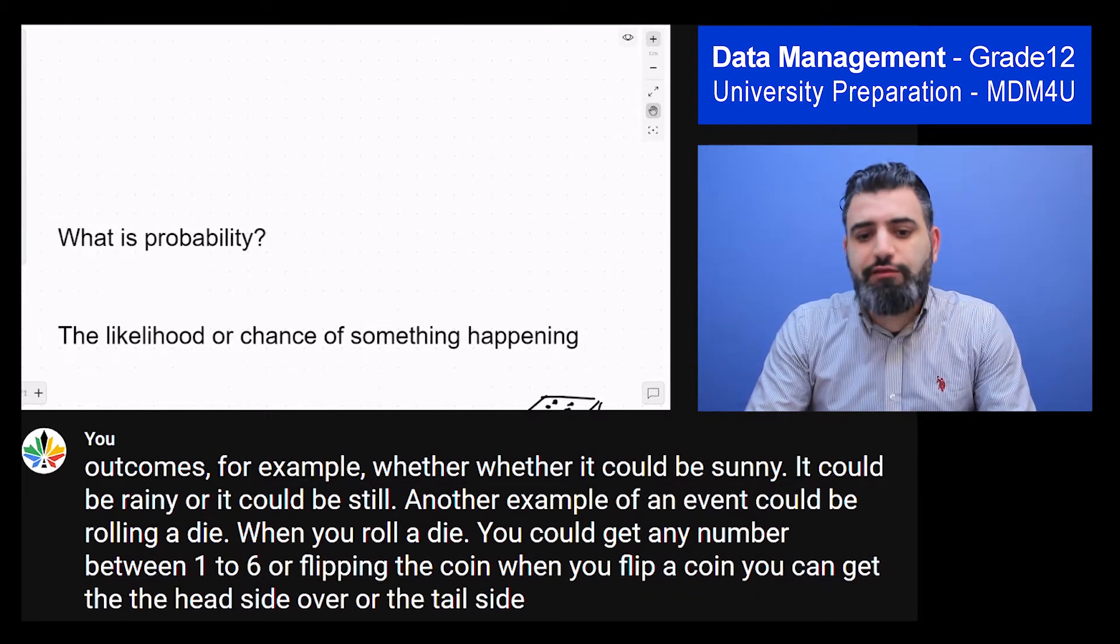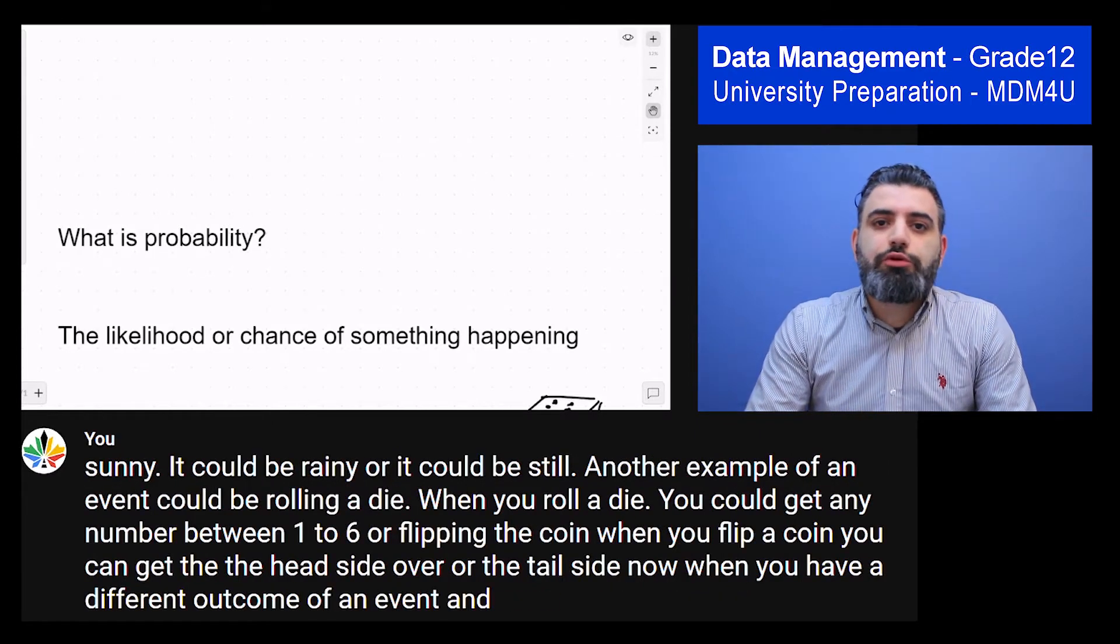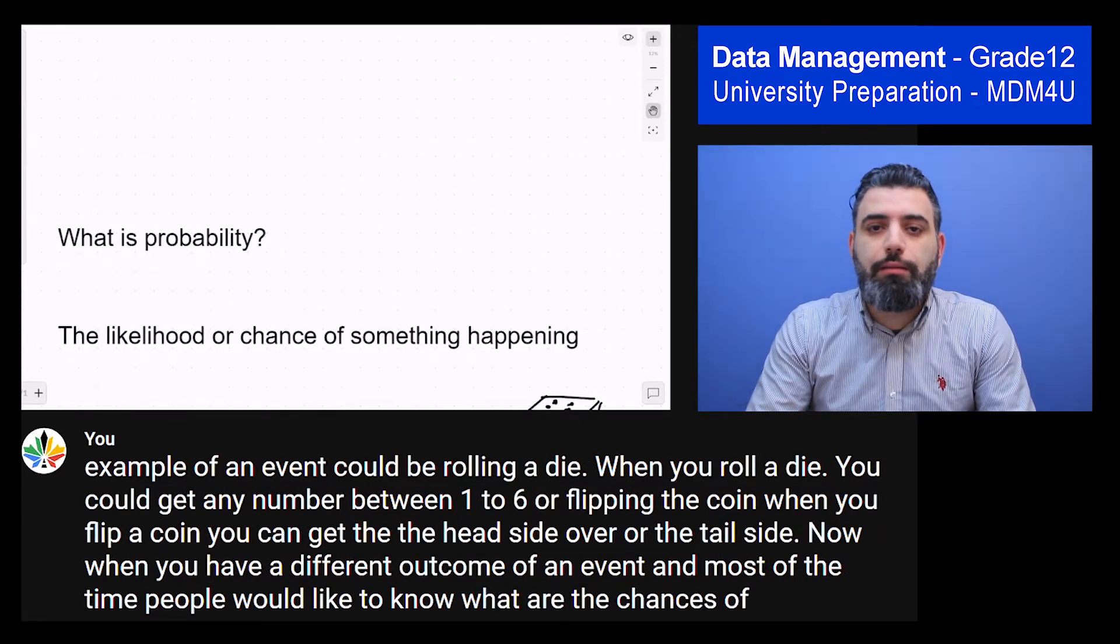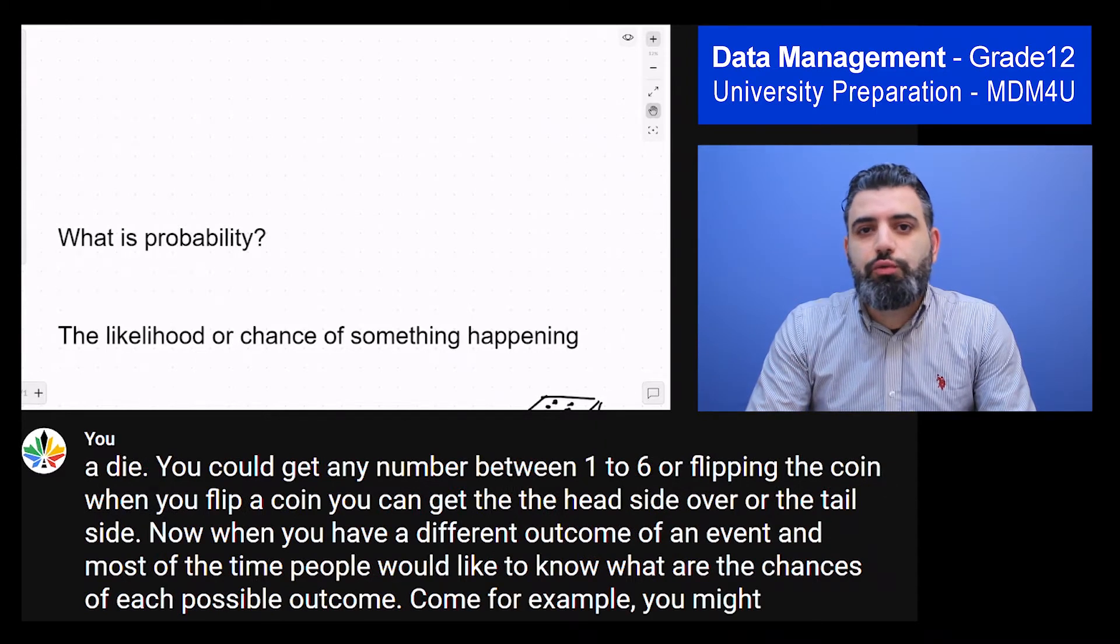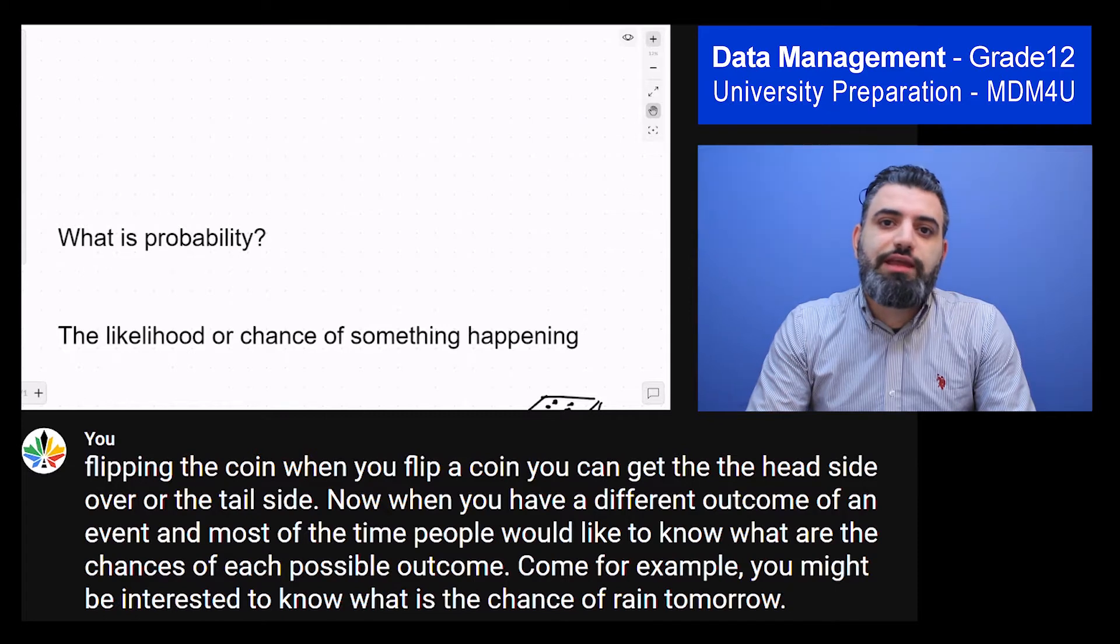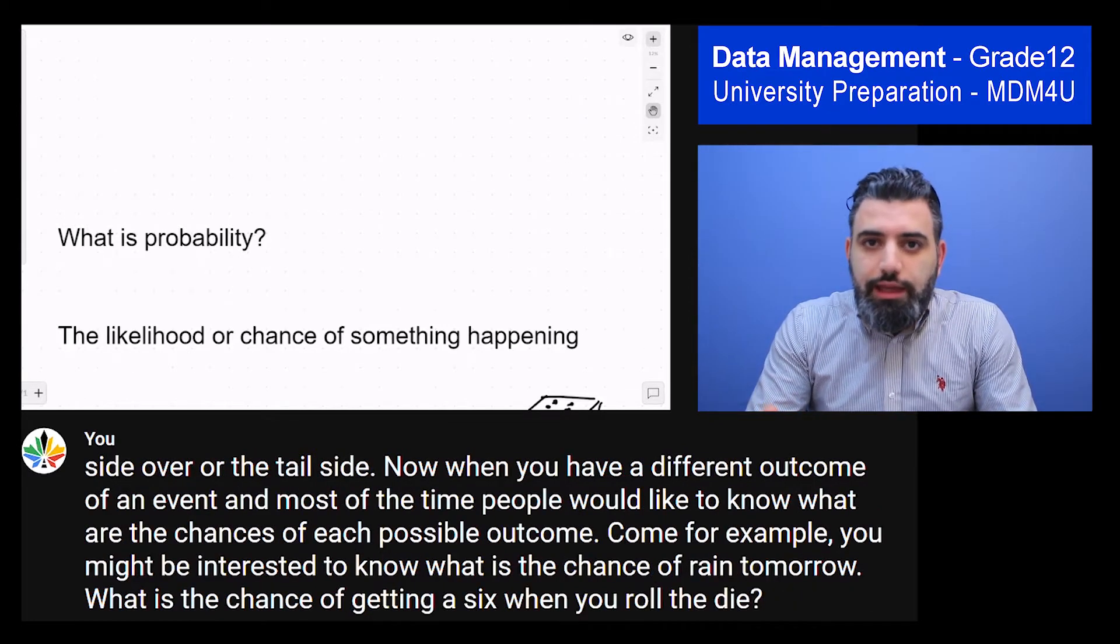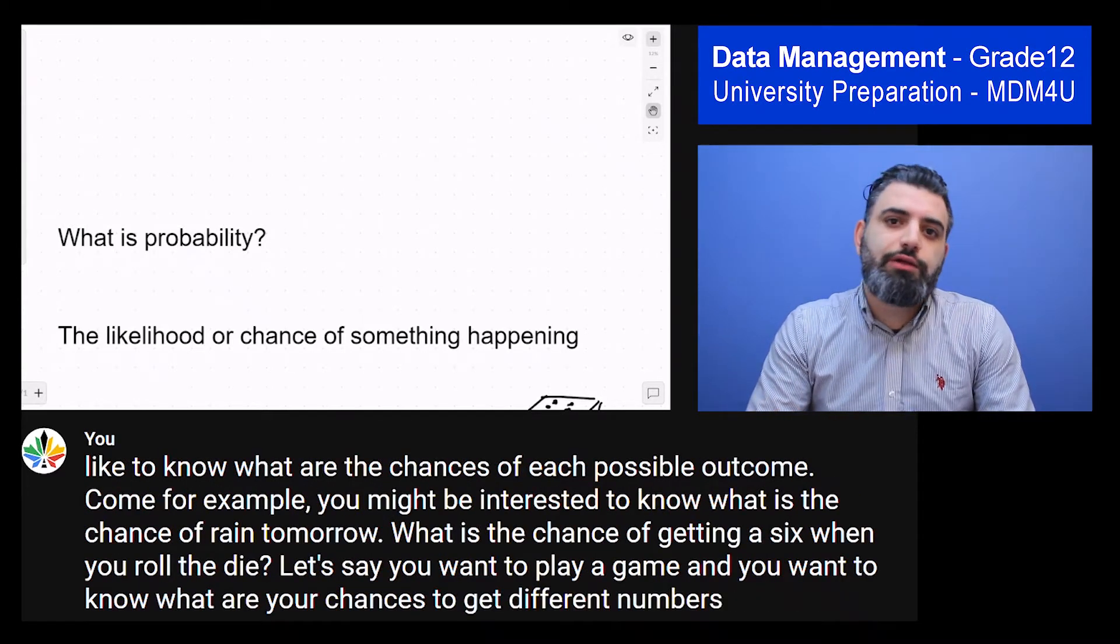Now when you have different outcomes of an event, most of the time people would like to know what are the chances of each possible outcome. For example, you might be interested to know what is the chance of raining tomorrow. What is the chance of getting a 6 when you roll a die. Let's say you want to play a game and you want to know what are your chances to get different numbers. How can we calculate those things?